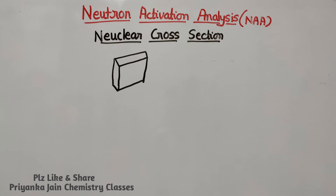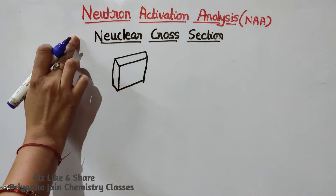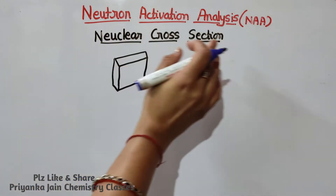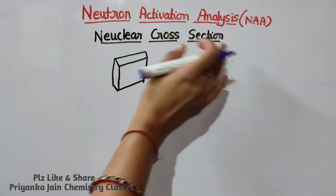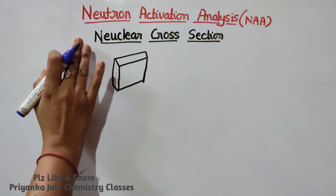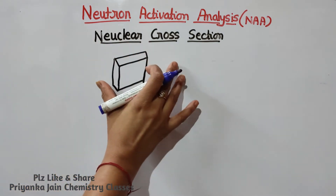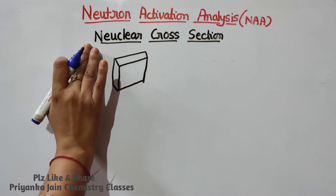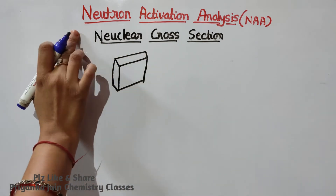Hello students, welcome to chemistry class. We are studying nuclear chemistry. In our last lecture we saw several types of formulas and various numericals. Now we have to study one very important topic: neutron activation analysis, generally known as NAA. Before that, we will start with a small topic that has remained — nuclear cross-section — and then we will cover neutron activation analysis.